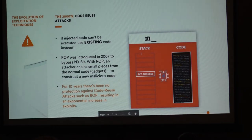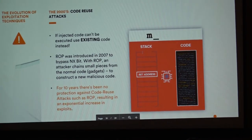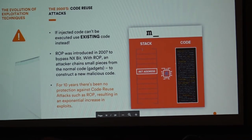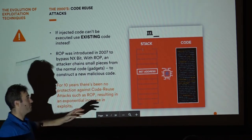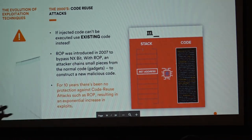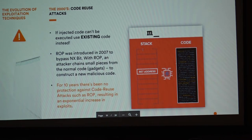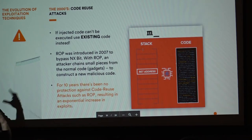So the attacker said: if I cannot inject my own code into the program, why not use the existing code that's already there? This is code reuse — like a ransom letter where you cut letters from a newspaper to write a new sentence. The attacker injects new return notes telling the CPU where to execute next, using existing code pieces. This is called code reuse attacks — ROP (Return Oriented Programming), COP (Call Oriented Programming), and JOP (Jump Oriented Programming).